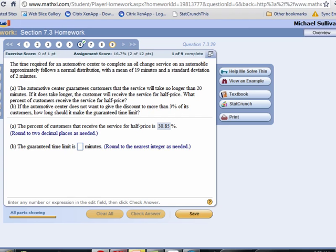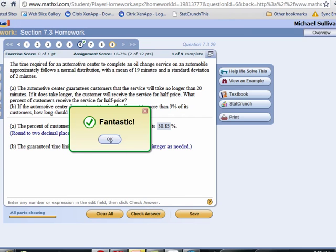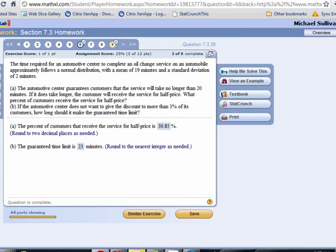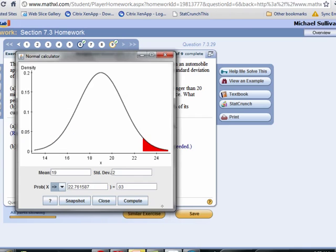Let's make sure we're right. What did I say? Rounded to the nearest integer. Oh, they want 23 minutes. That's boring. I like our 22.76 minutes. How did I get the 22.76?